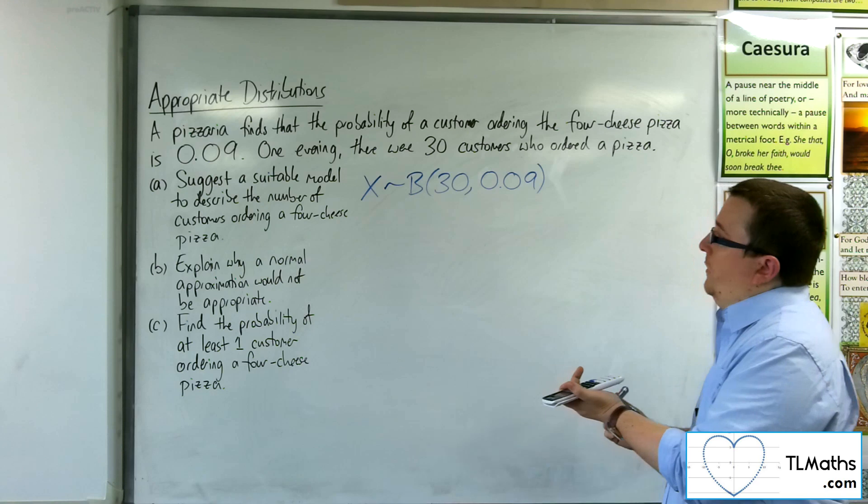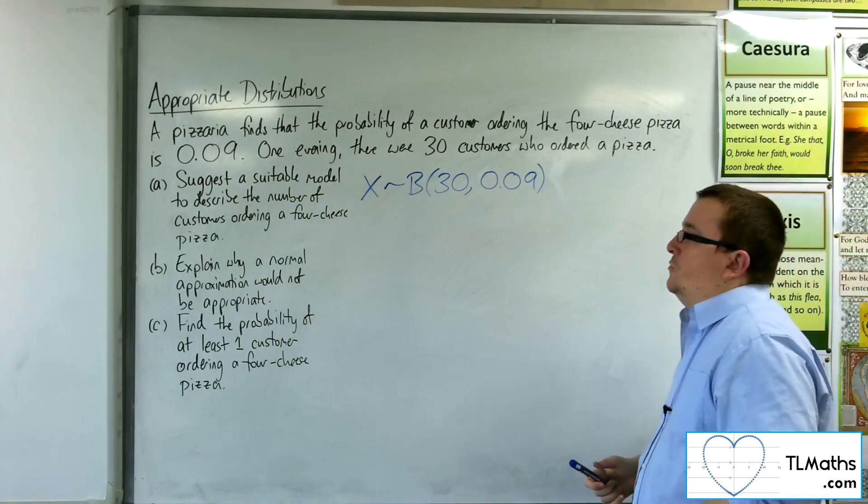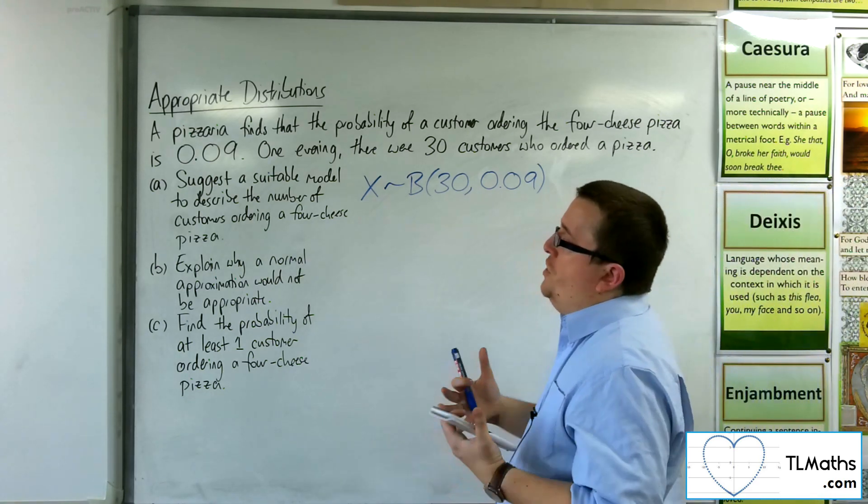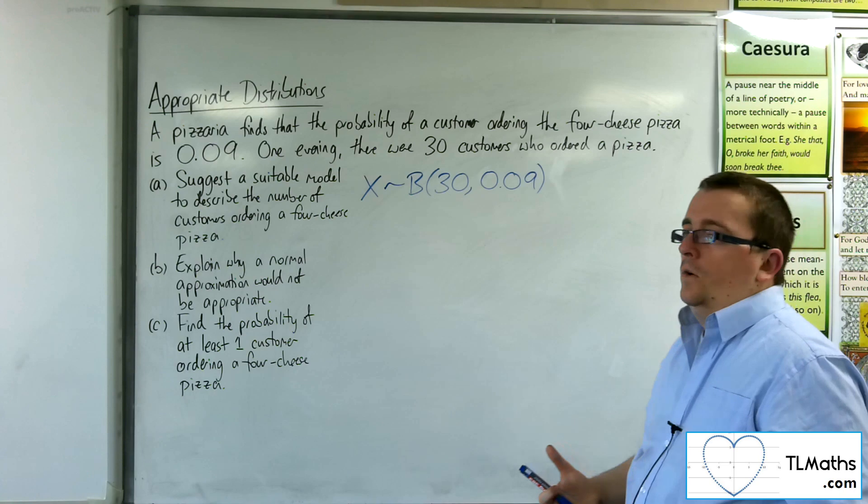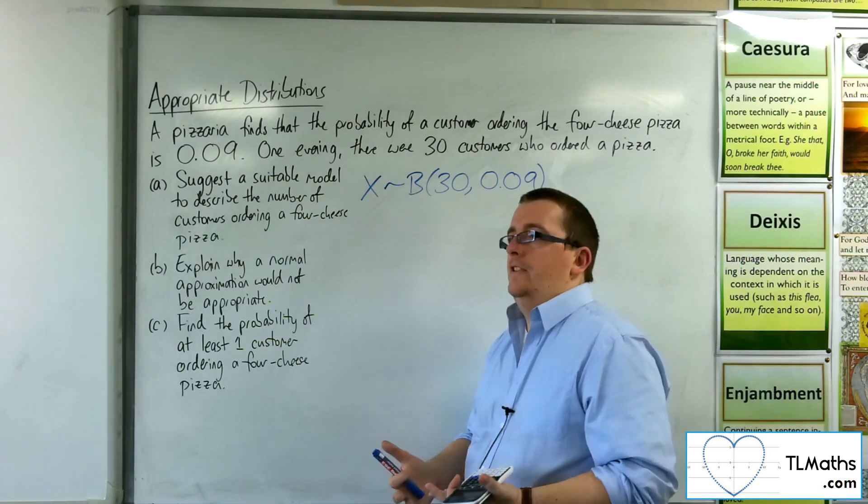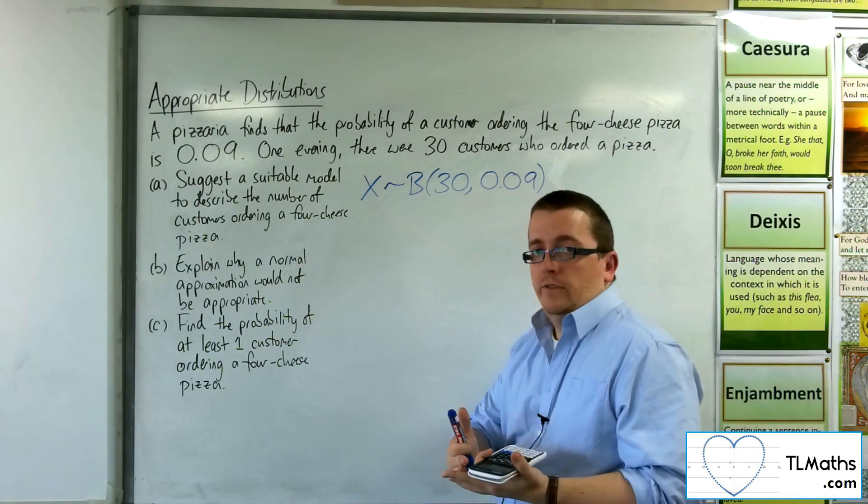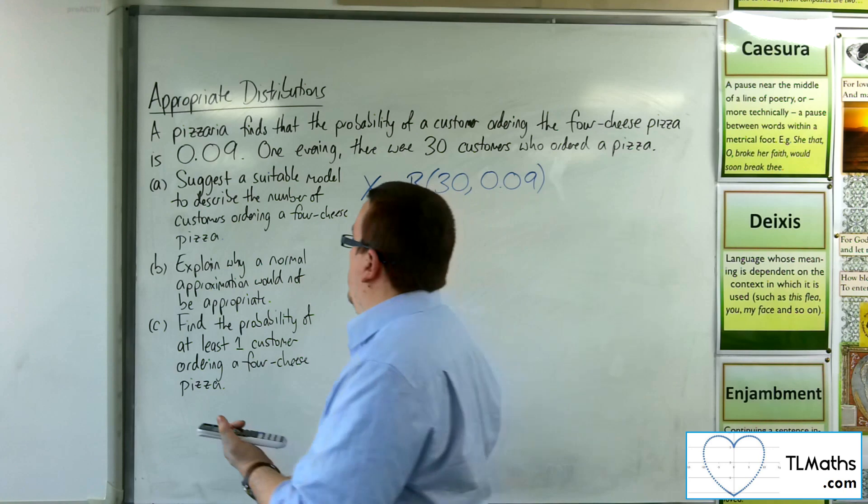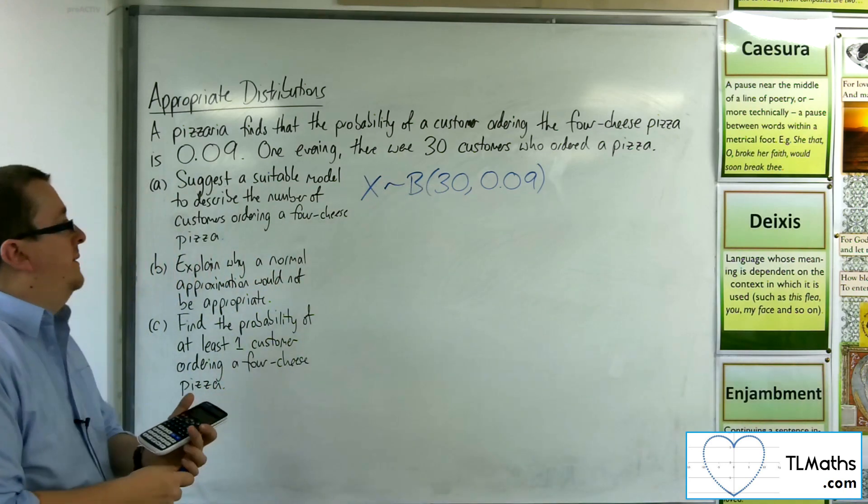Now, in the second part, explain why a normal approximation would not be appropriate. Well, you can look at the mean and variance of the normal distribution that you would get if you approximated it.